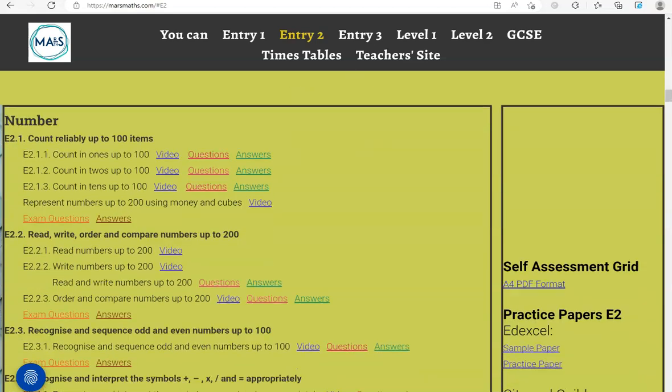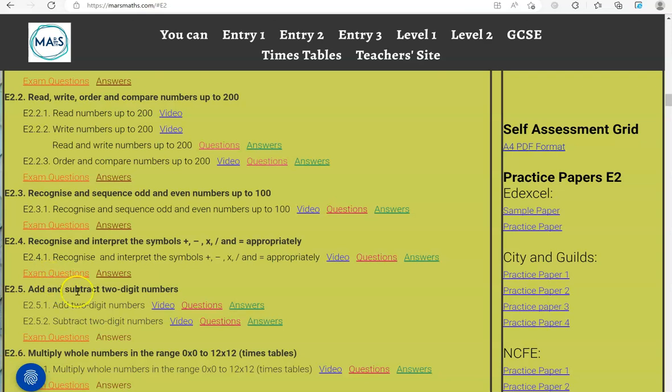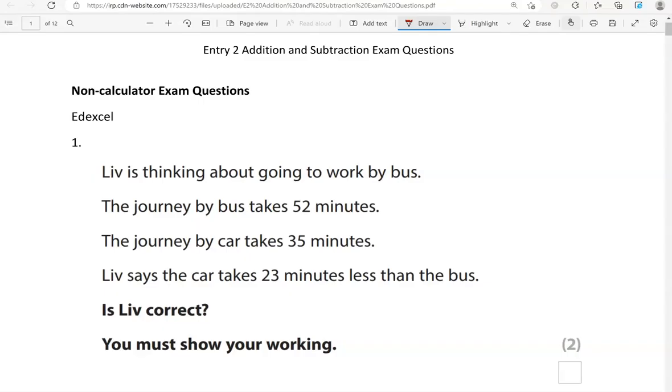In this video, we'll go through exam questions that cover the Entry 2 criteria: add and subtract two-digit numbers. You can locate the questions on the massmass.com website under Entry 2. The questions come from different exam boards. We'll start with the non-calculator questions and then move to the calculator questions. Here's the first one.